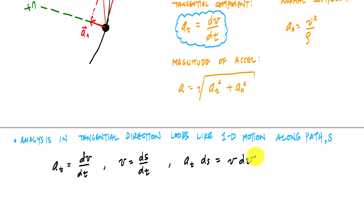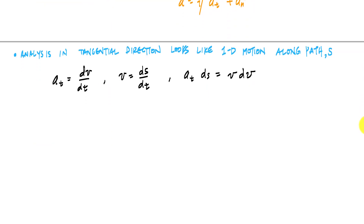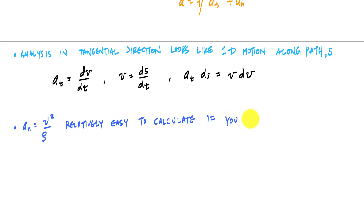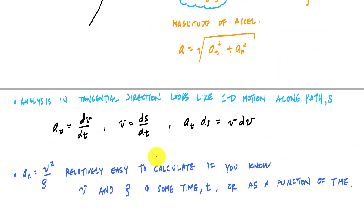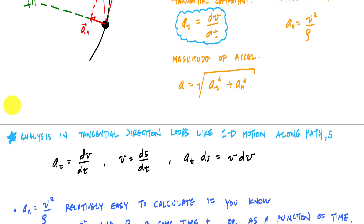The normal component of acceleration — sometimes called centripetal acceleration — is a_n = v²/ρ. This is relatively easy to calculate if you know the speed and the radius of curvature at some time t or as a function of time. The real power of normal-tangential components is that looking in the tangential direction is like looking at 1D motion.